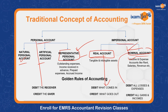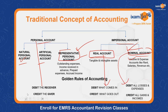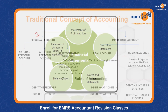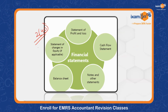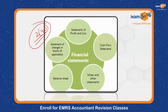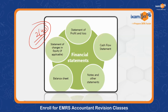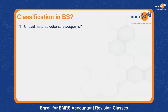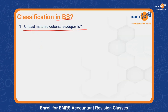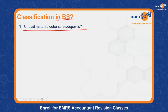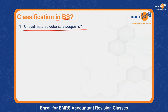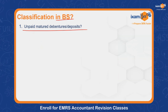Nominal account — debit all losses and expenses, credit all gains and income. Section 40 of the Companies Act 2013 states there are five types of financial statements: P&L account, balance sheet, notes to accounts, cash flow statement, and statement of changes in equity. Now tell me — what is the balance sheet classification of unpaid matured debentures?